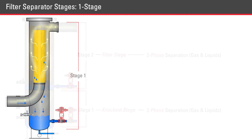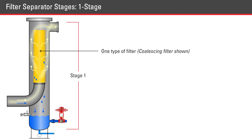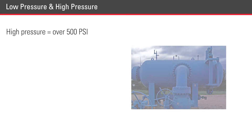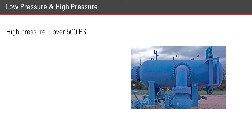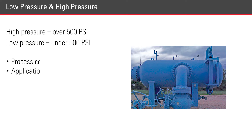In a single-stage vessel, there is only one type of filter element used. This is also called a single-element filter separator. Filter separator vessels can be high pressure, which is anything over 500 psi, or low pressure. Which vessel is used will depend on the process conditions and application.